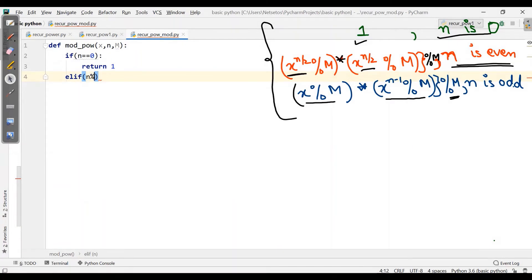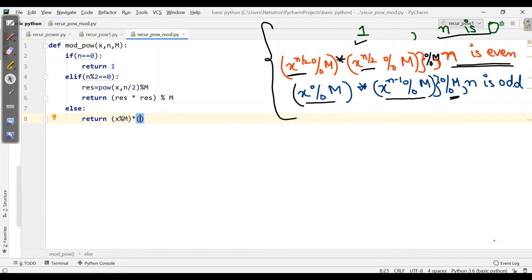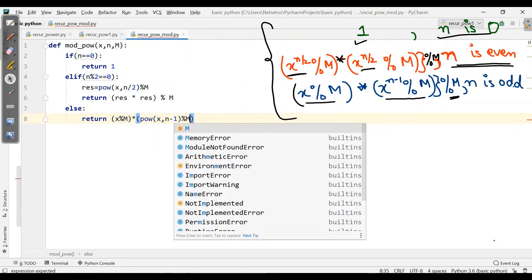Elif, if n is even, so here I will write n modulus 2 is equal to 0. It will return, but before that I need to write an expression which will be stored in result, equals po of x and n by 2, where po is power of x and n by 2, which will be mod M. So here it will return res, that stands for result, times res, and then collectively mod M. Now we will see the condition for odd number, which will be directly return x mod M into po of x and n minus 1 mod M, and then collectively mod M.